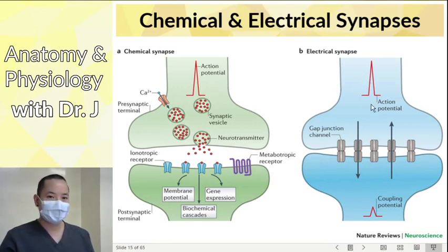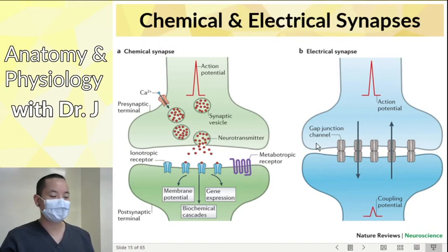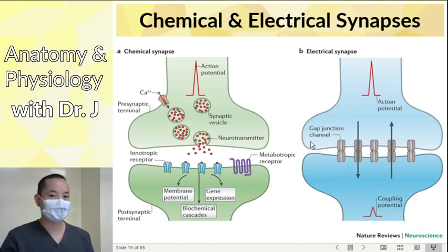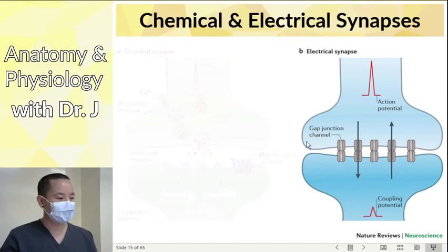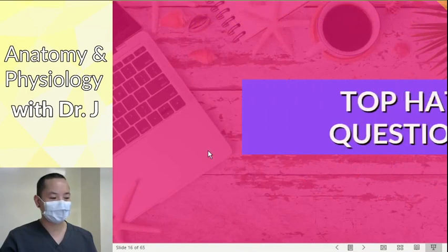This might not seem as familiar. What we have here is an action potential at an electrical synapse. Action potentials are still involved, but now they involve special things called gap junctions. If you remember all the way back to chapter four, we did mention gap junctions — something special about them. Let's focus on electrical synapses for now.